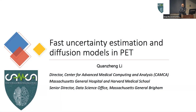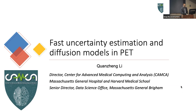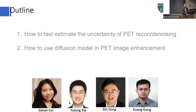If you cannot pronounce my name, call me Q — it's easier for you to approach me. My talk has two topics: one related to the first talk and the second one related to the second talk, so it's good that I was switched to this session. The work is done by Jana, my PhD student, my collaborator Bingdong at Beijing University, and PhD student Yutong. Kwang is also in this conference.